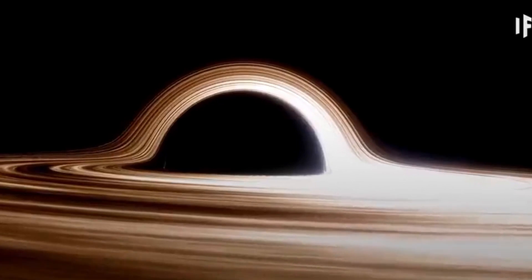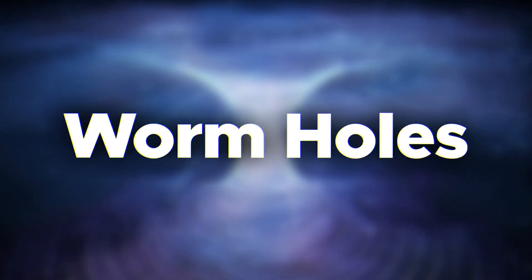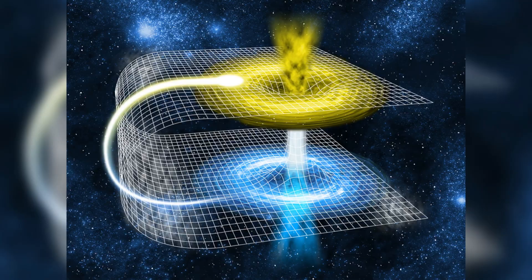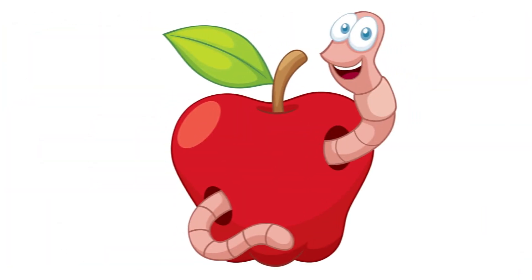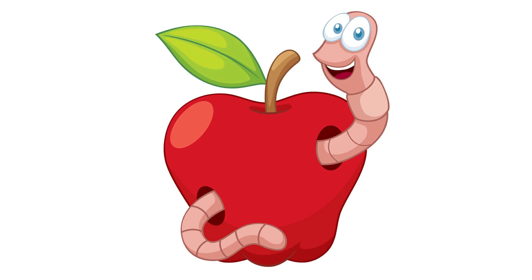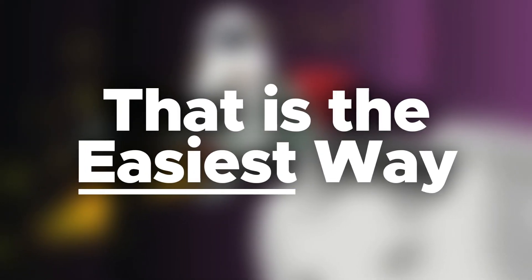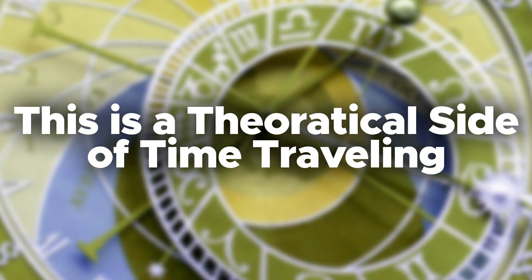The third and last method is wormholes, also known as the Einstein-Rosen bridge — a way that connects two places in space-time. It is like a worm making a hole from a point on the surface of an apple through its diameter to the other end. That is the easiest way to travel through the diameter. This is only a theoretical idea describing a method for time travel.